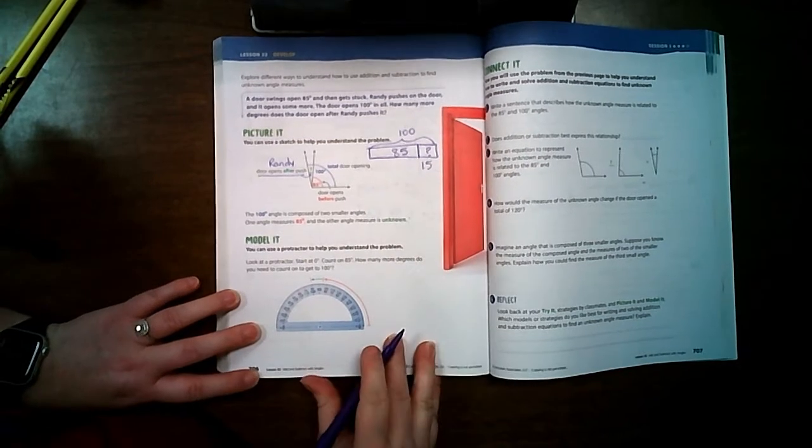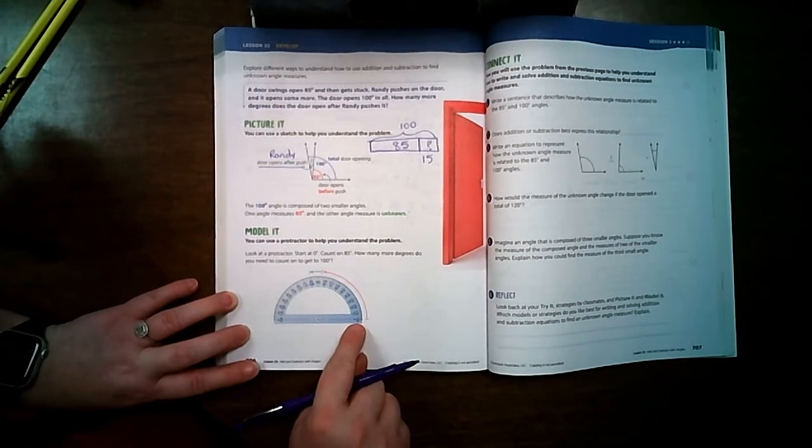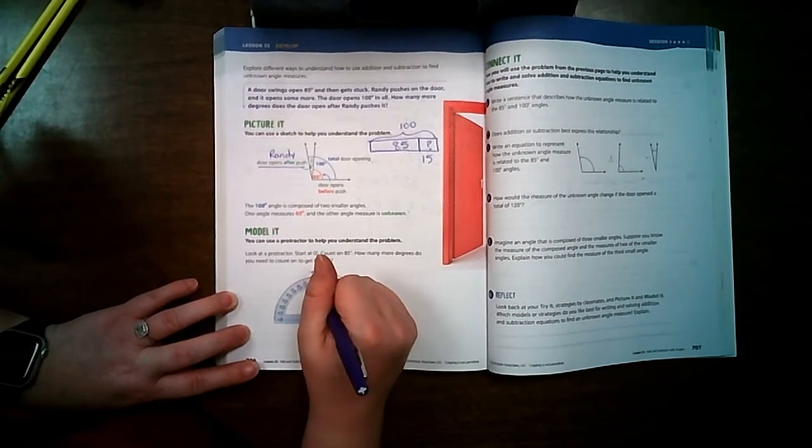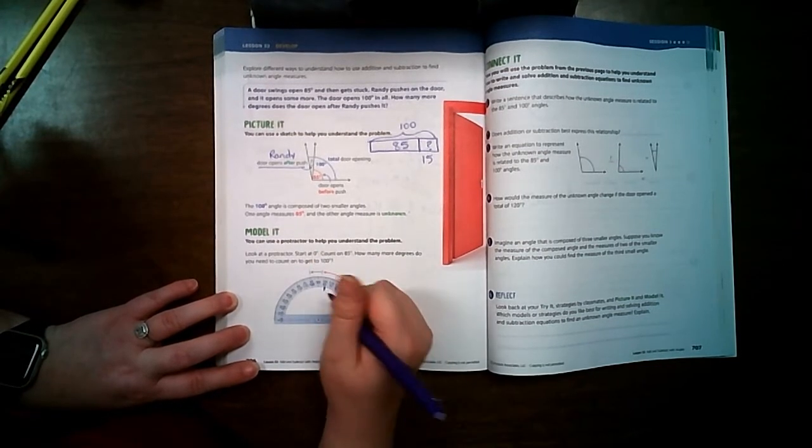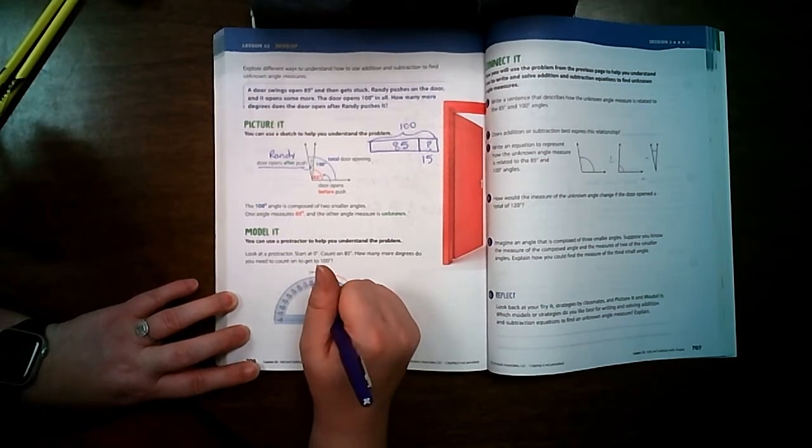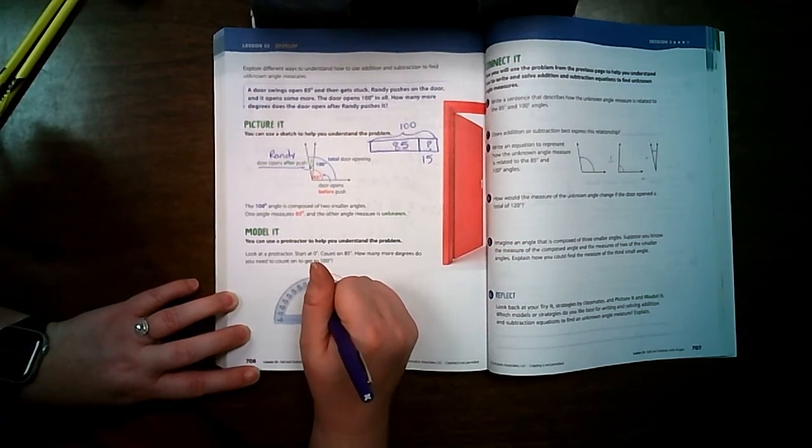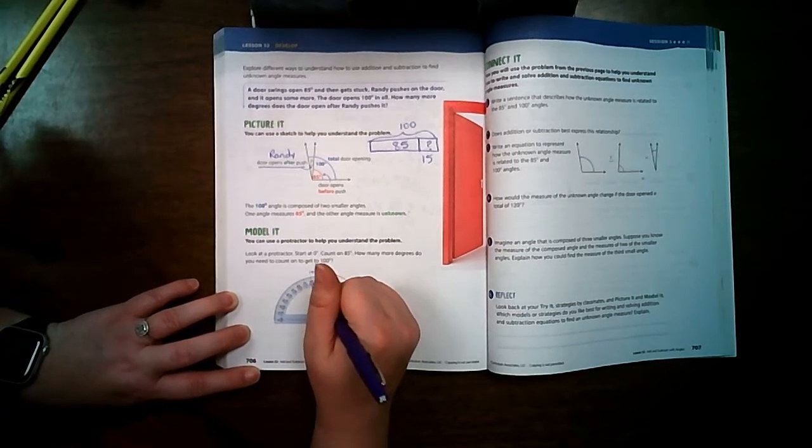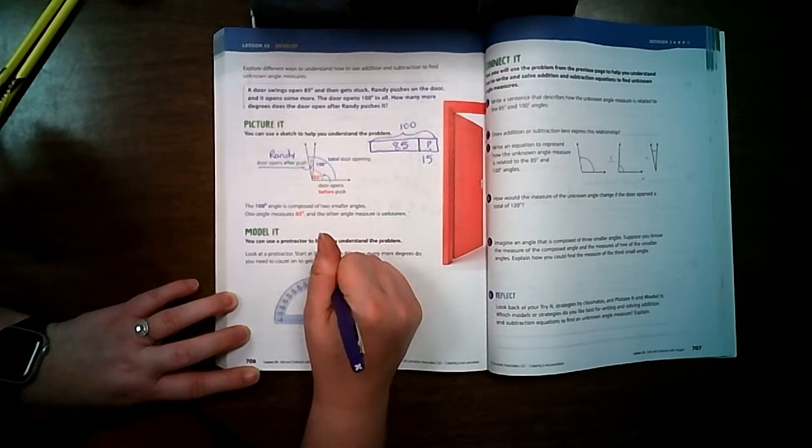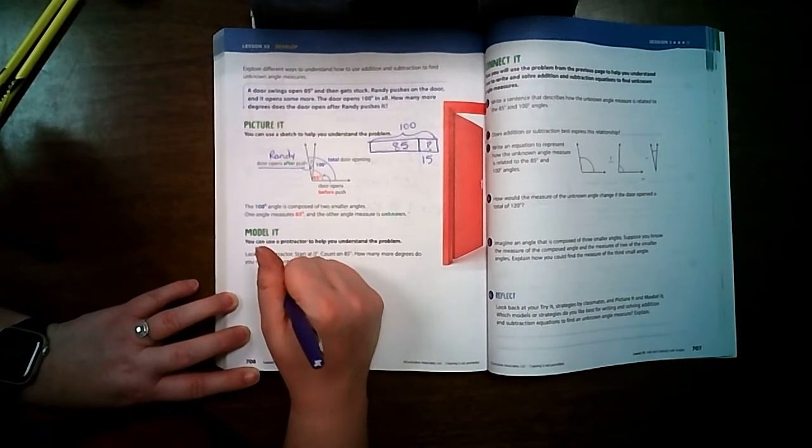You can also do it with a protractor. So right here, the first line was drawn to 85 degrees and we knew that we got to 100 degrees. So 85 degrees plus what equaled 100 degrees?